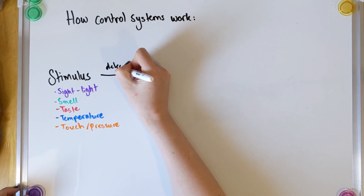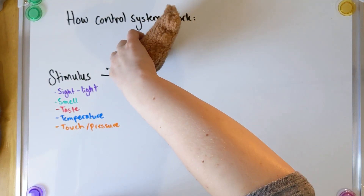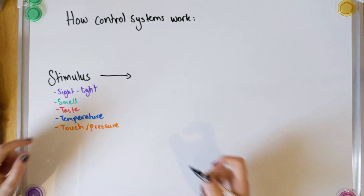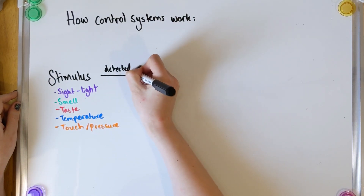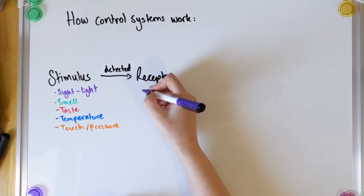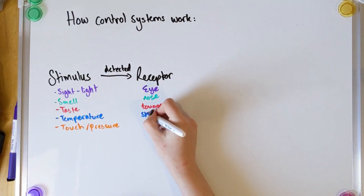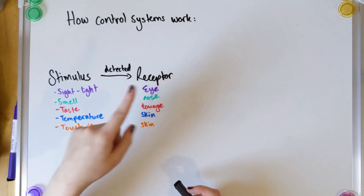Stimuli are detected by receptors. Receptors are just organs or parts of your body that detect stimuli. So for example, for the sense of sight, you've got the eye. For smell, you have the nose. You might be tempted to say you touch things with your hands or fingers, but it's the skin on the fingers and hands that does the detecting — so they only allow skin in the exams. So: stimulus is a change in the environment, it's detected by a receptor.